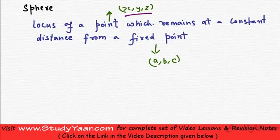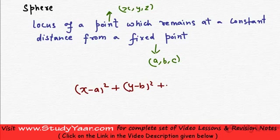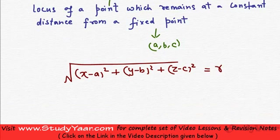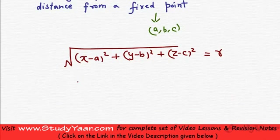So what is the distance between these two points? It is actually the square root of (x minus a) whole square plus (y minus b) whole square plus (z minus c) whole square. That whole root is the distance. It remains fixed, so let's just suppose it is r.